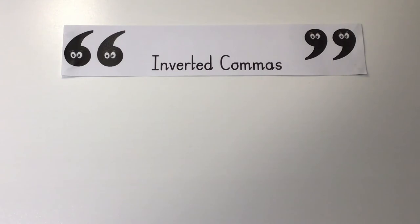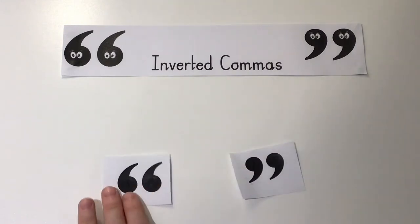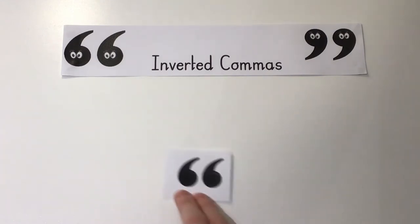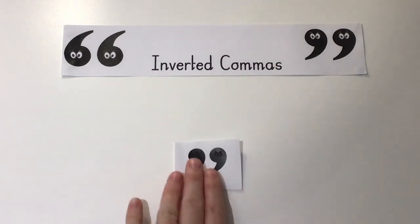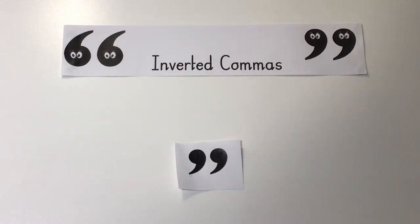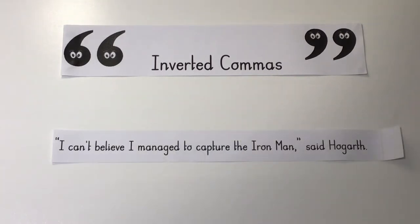Inverted commas can also be called speech marks. It is important to remember that all of the words which are spoken are enclosed with inverted commas. The first pair of inverted commas look like the number 66 — this is a really good way of remembering which comes first. We call these the opening inverted commas. The other pair look like the number 99, and we call these the closing inverted commas because they close and end the direct speech.